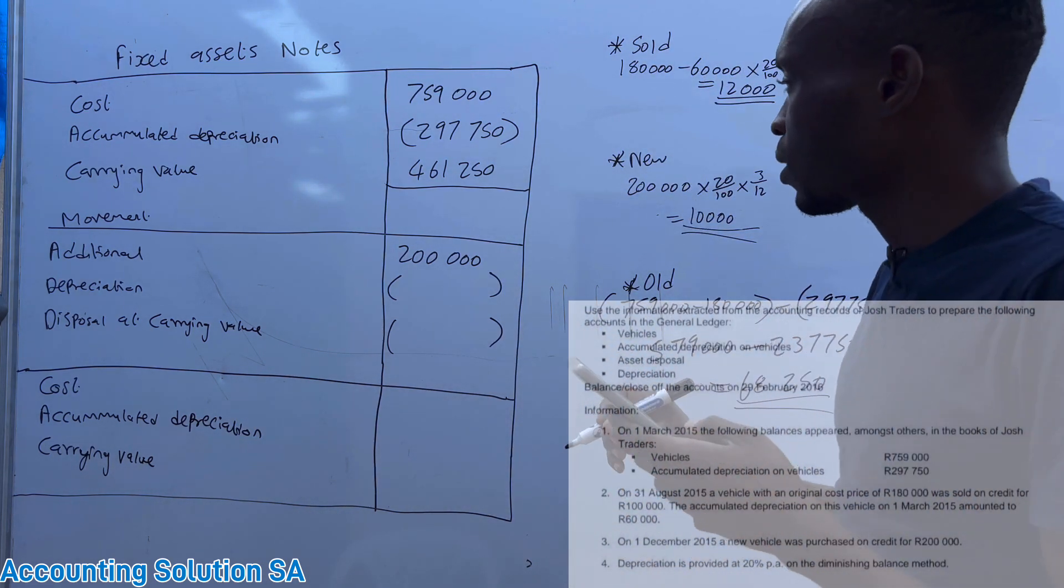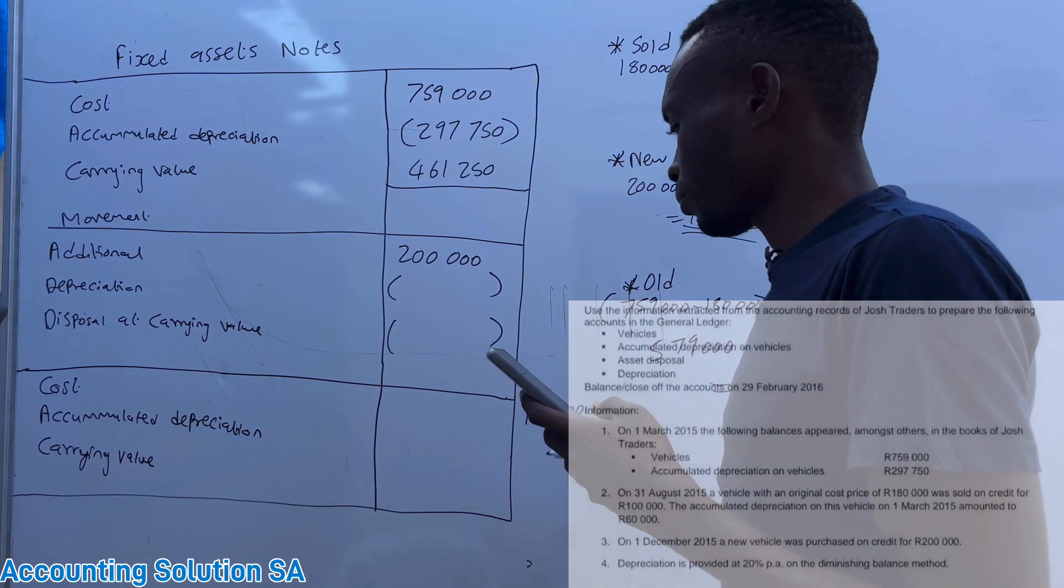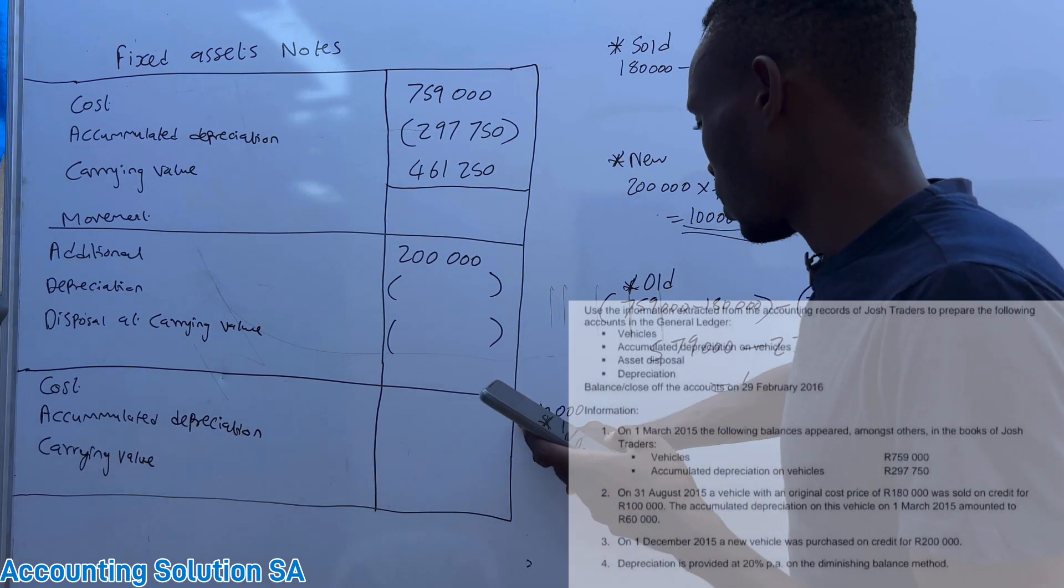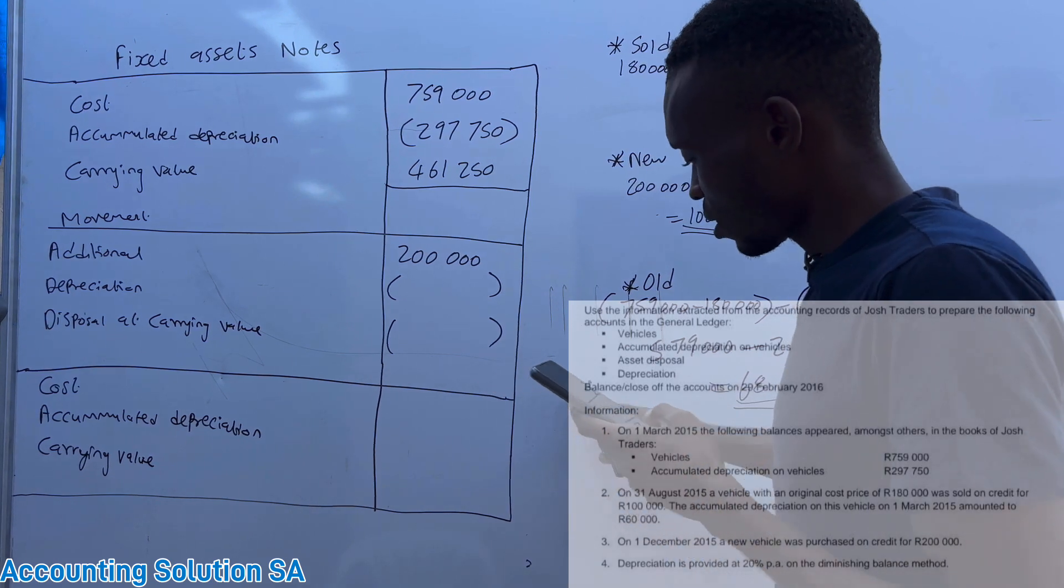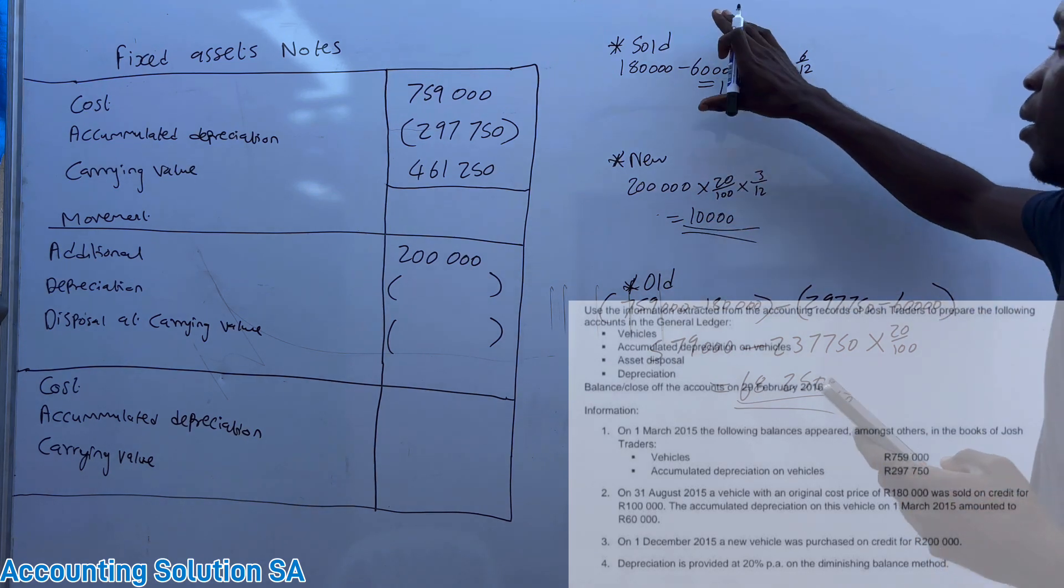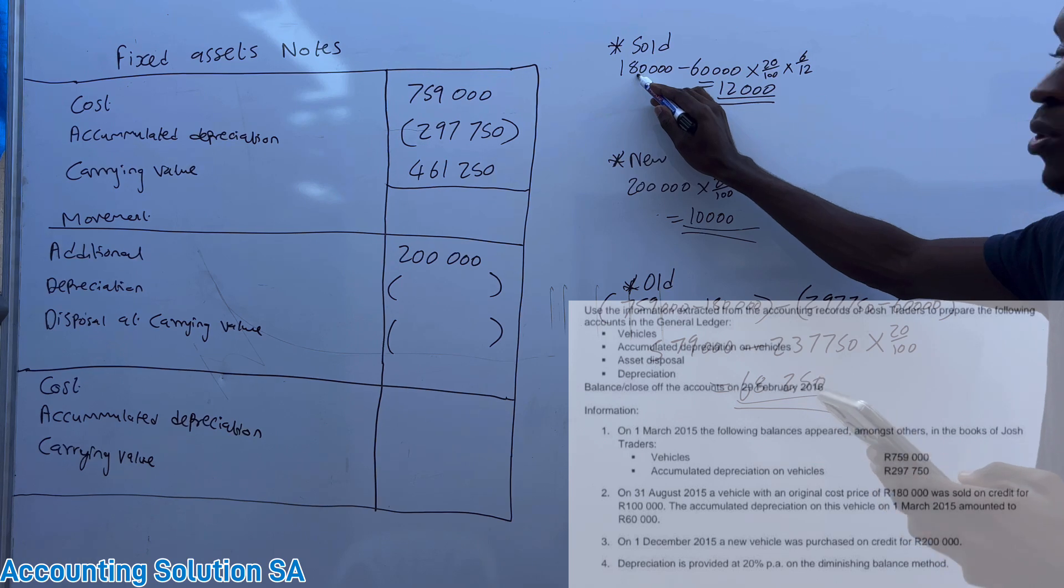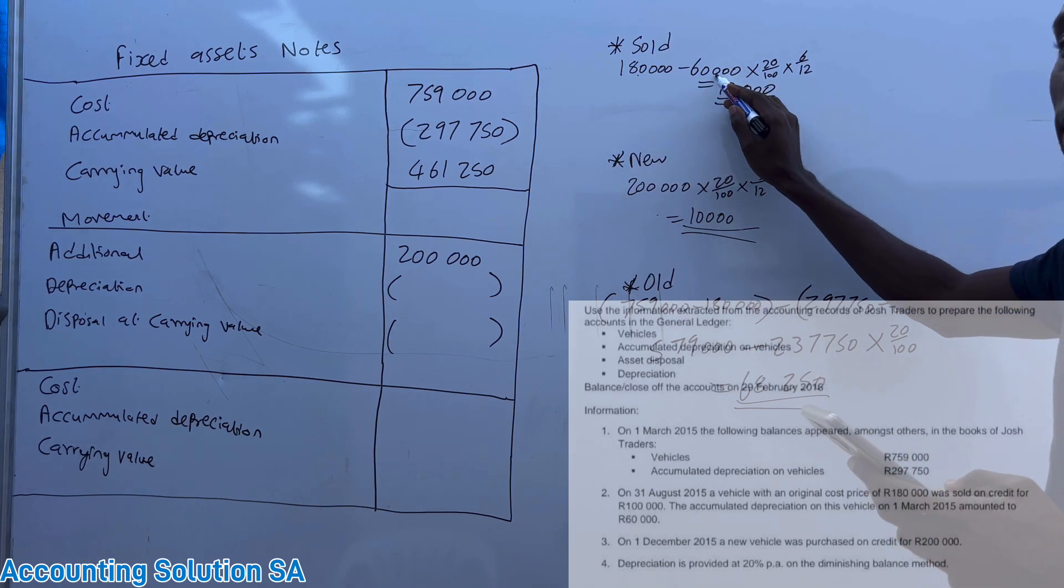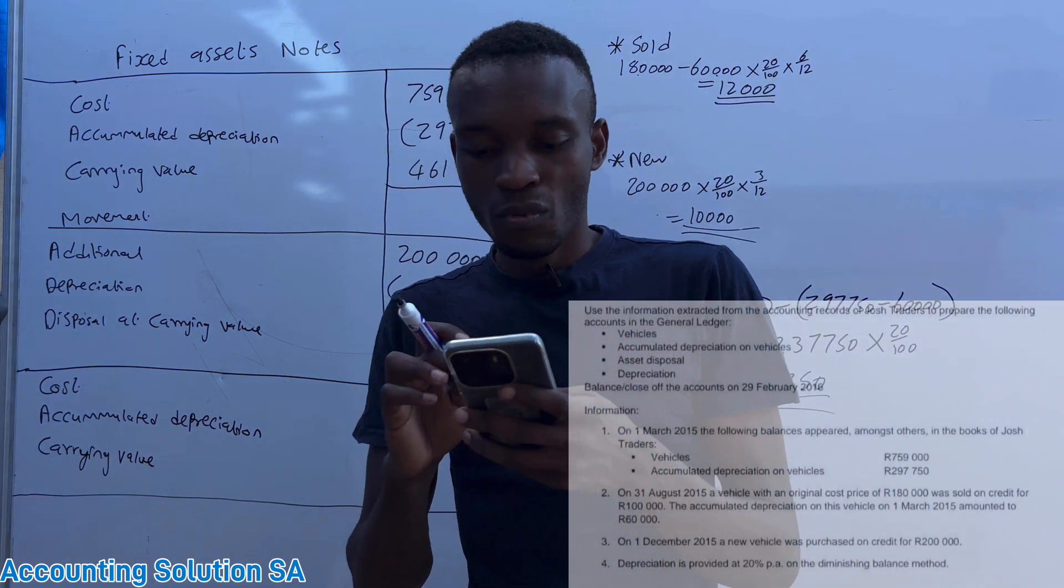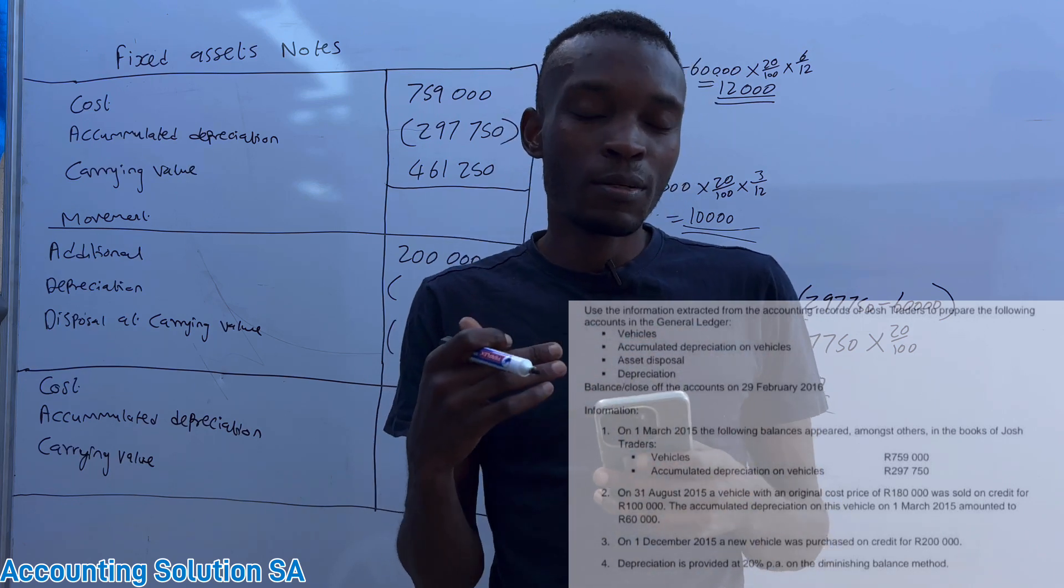We have a cost price of 180,000 and then our accumulated... Guys, there's no need for me to repeat this because this calculation we did it on the previous one, but I'm going to explain. This is the first calculation that we did. We take 180,000 which is cost price minus accumulated depreciation.